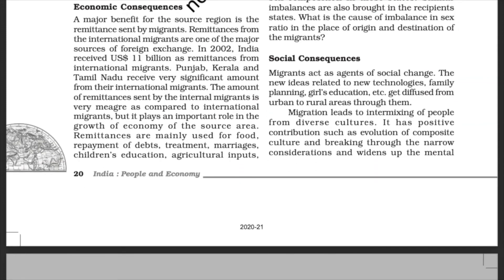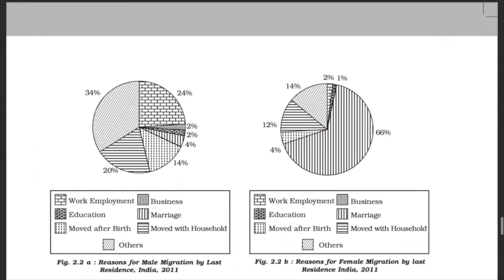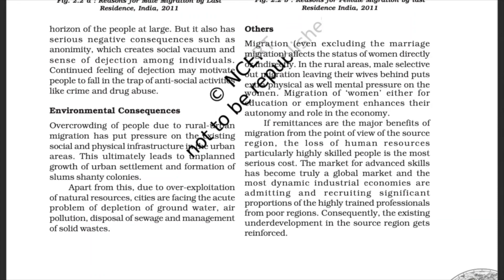Social Consequences: Migrants act as agents of social change. New ideas related to new technologies, family planning, and girls' education get diffused from urban to rural areas through them. Migration leads to intermixing of people from diverse cultures. It has positive contributions such as the evolution of composite culture and breaking through narrow considerations, widening the mental horizon of people at large. But it also has serious negative consequences such as anonymity, which creates a social vacuum and sense of dejection among individuals. Continued feelings of dejection may motivate people to fall into the trap of antisocial activities like crime and drug abuse.